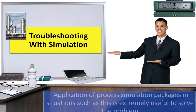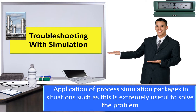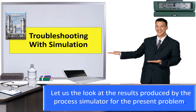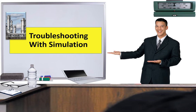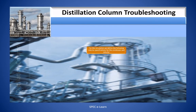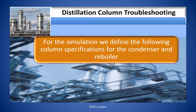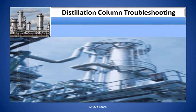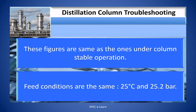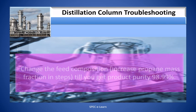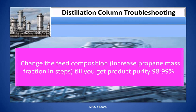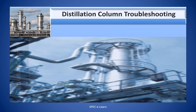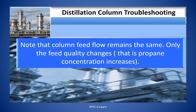Troubleshooting with simulation. Application of process simulation packages in situations such as this is extremely useful to solve the problem. For the simulation, we define the following column specifications for the condenser and reboiler: reflux ratio 9.1179, boil-up ratio 213.891. These figures are the same as those under stable column operation. Feed conditions are the same at 25 degrees centigrade and 25.2 bar. The feed composition is changed — increasing the propane mass fraction in steps — until the product purity of 98.99% is obtained.